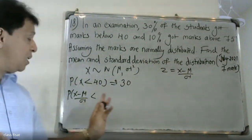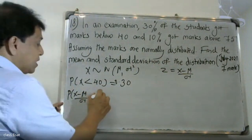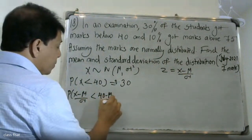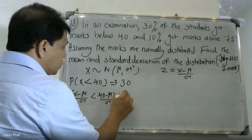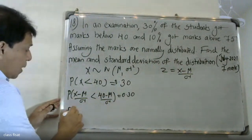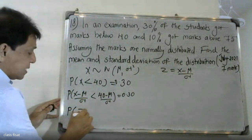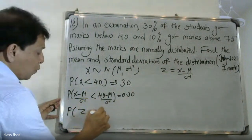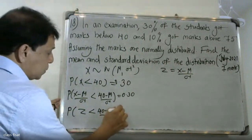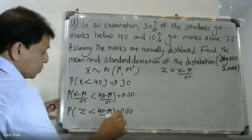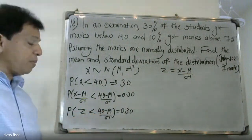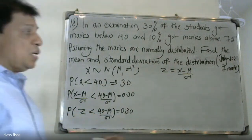So the probability of Z less than 40 minus mu by sigma is equal to 0.30. We draw the bell-shaped diagram and work with this expression.